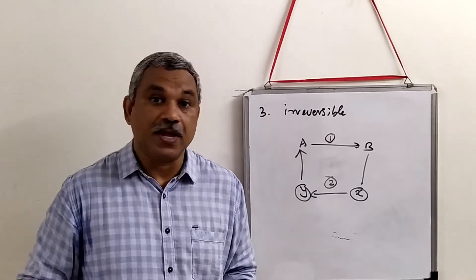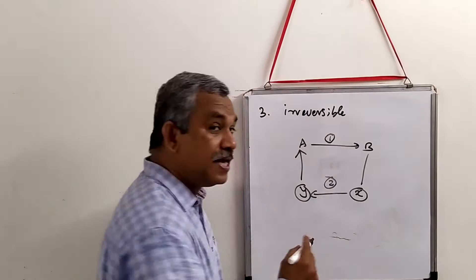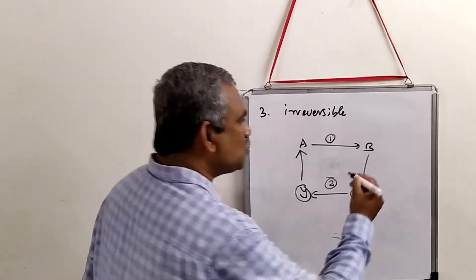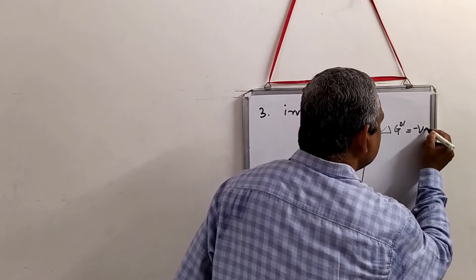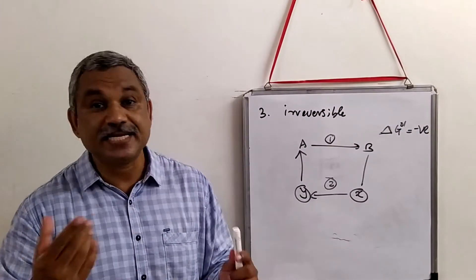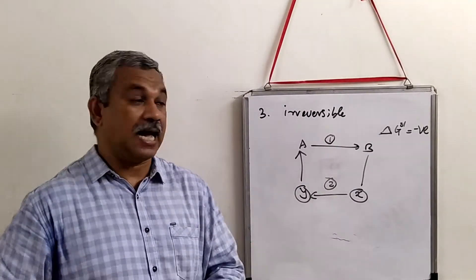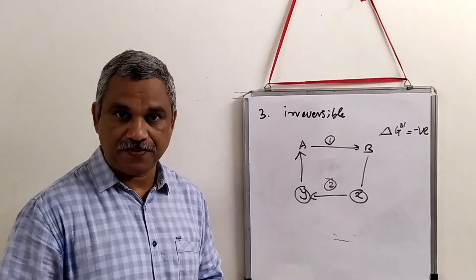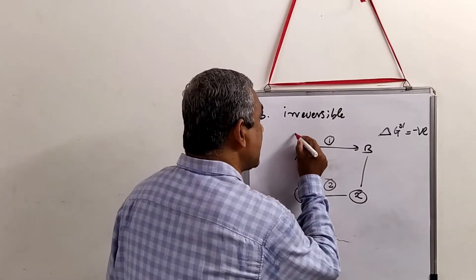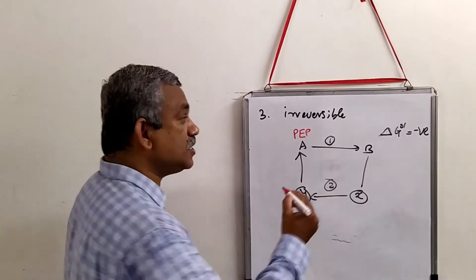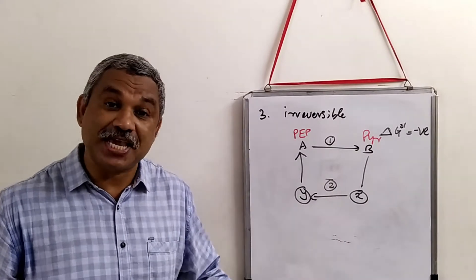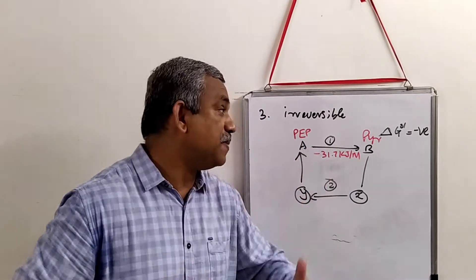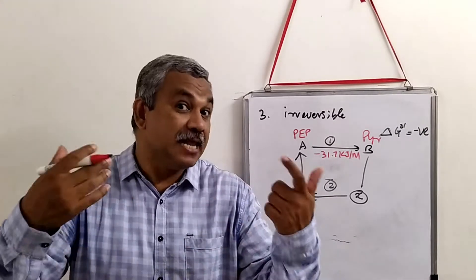How does a cell ensure that metabolic pathways are not reversed? What it does is very interesting: there will be a huge free energy change in one of the steps. The delta G will be negative, and if the delta G is negative, it cannot be reversed unless you invest energy. For example, in glycolysis, phosphoenolpyruvate (PEP) is converted to pyruvate with a delta G of minus 31.7 kilojoules per mole — energy is liberated in that process.